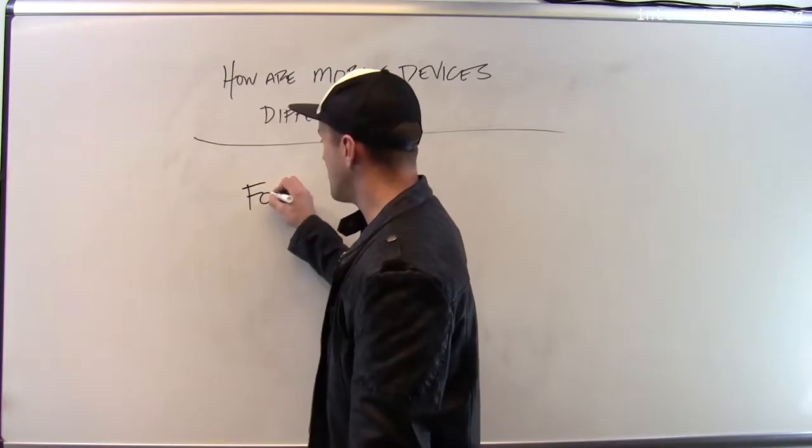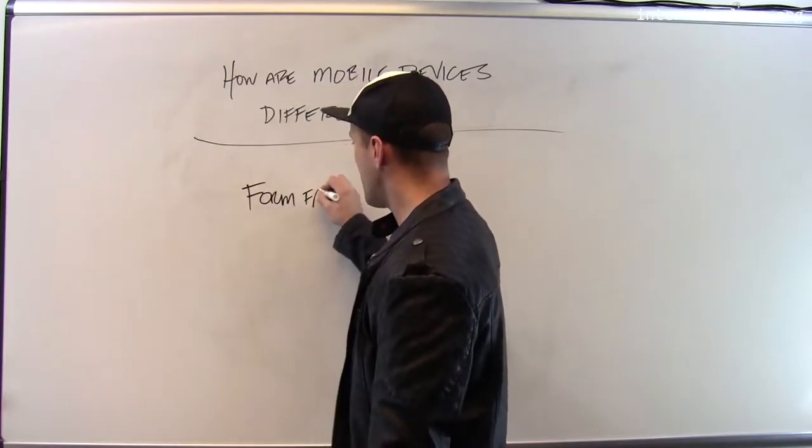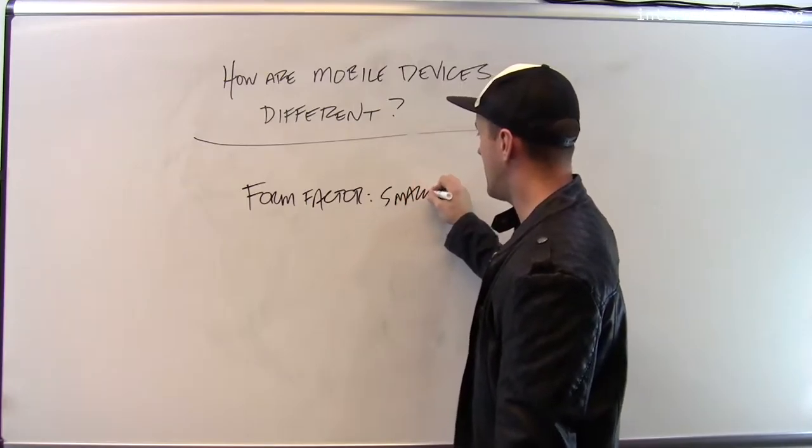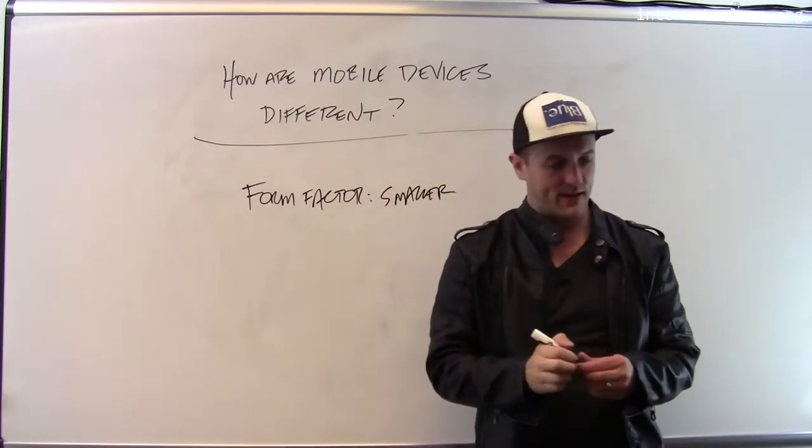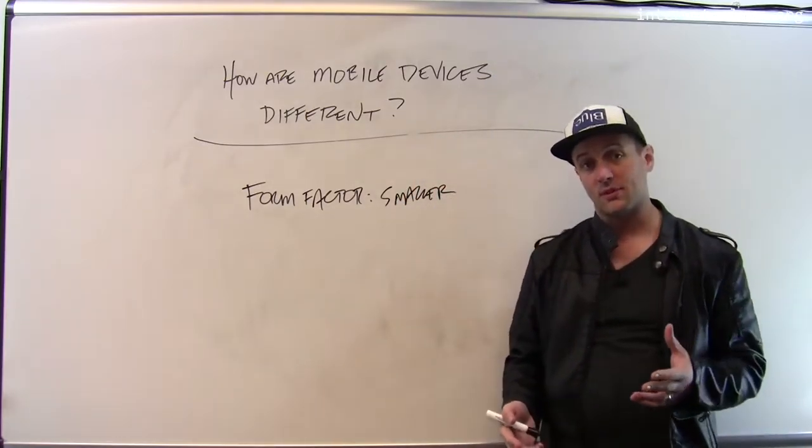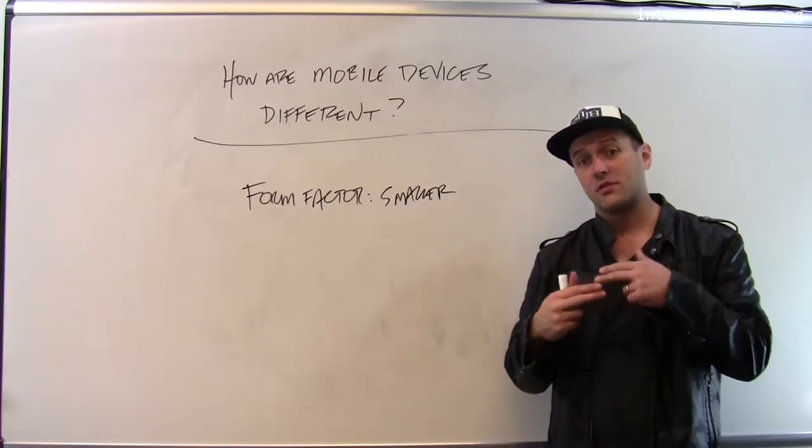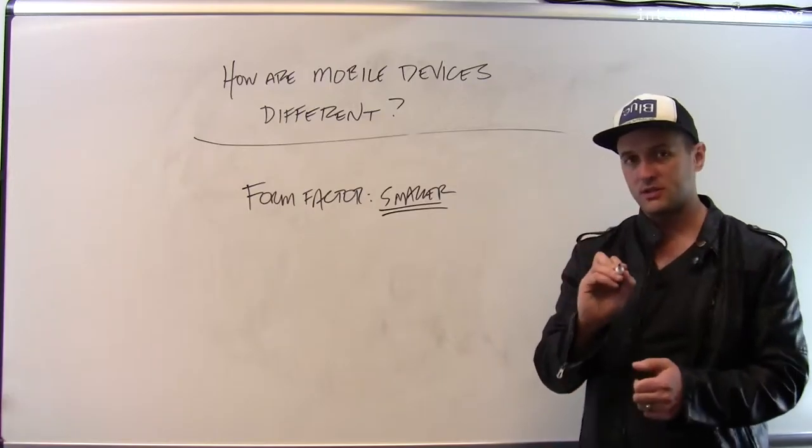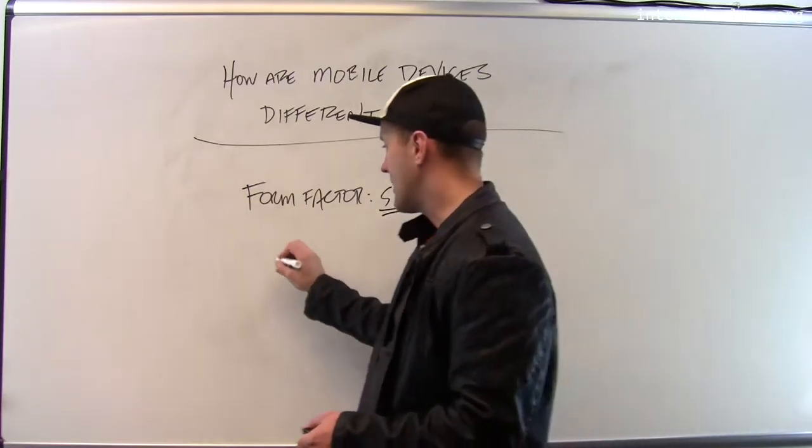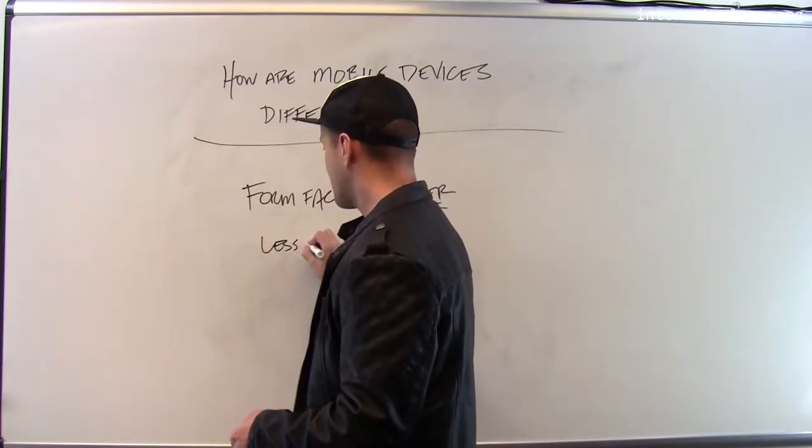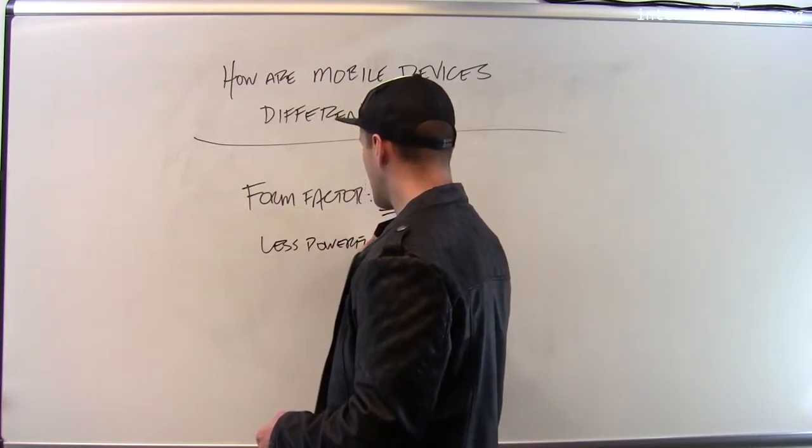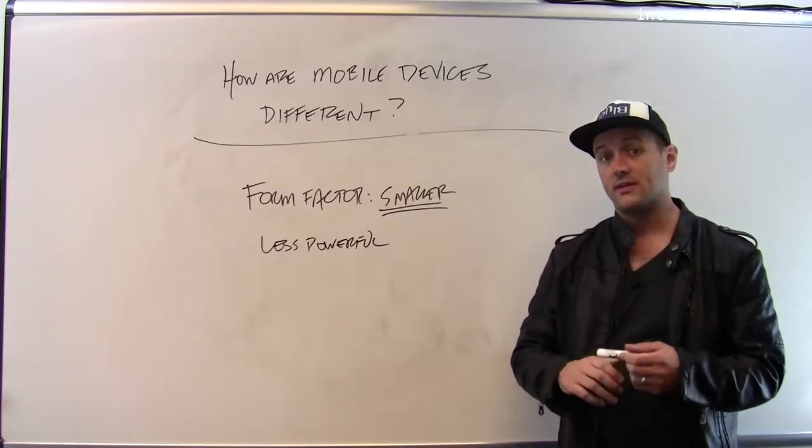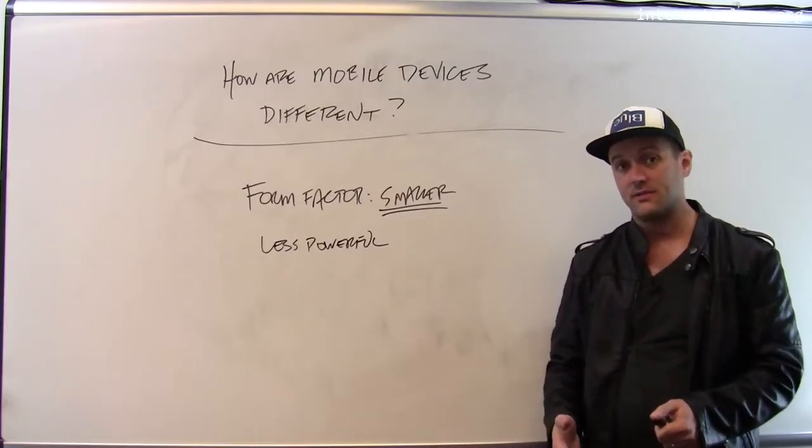So how are mobile devices different? A lot of this comes down to form factor. Mobile devices are smaller than other types of devices - even than your typical laptop, a mobile device might be 4 or 5 times smaller by volume. And what does this mean? They are less powerful because there is simply less room to put powerful processing units, the same amount of memory that I would find on another device, or huge hard drives that might take up a certain amount of space.